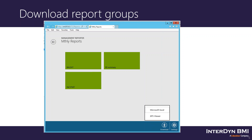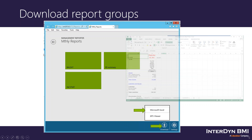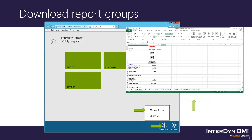When you generate that report group, it's going to open up a web page in the WebViewer. Depending on the reports in the report group, you'll have a link to each of the reports. Each green box represents a different report. You can click the individual green box to open individual reports, or if you click the download button and then click Excel, all of your reports will show up in one Excel file and every tab will represent a different report from that report group.